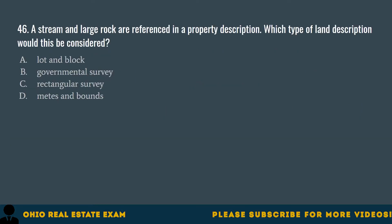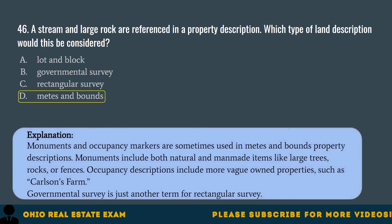Question 46. A stream and large rock are referenced in a property description. Which type of land description would this be considered? A. Lot and Block. B. Governmental Survey. C. Rectangular Survey. D. Metes and Bounds. The correct answer is D. Metes and Bounds. Monuments and occupancy markers are sometimes used in Metes and Bounds property descriptions. Monuments include both natural and man-made items like large trees, rocks, or fences. Governmental Survey is just another term for Rectangular Survey.